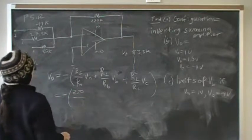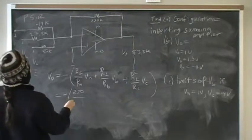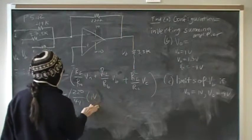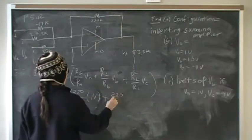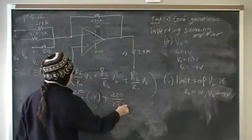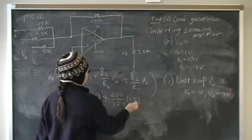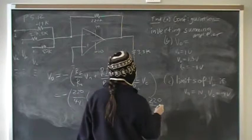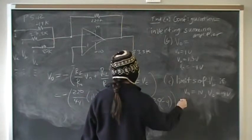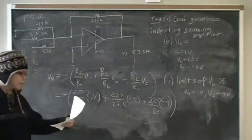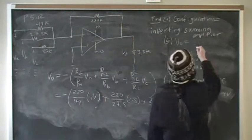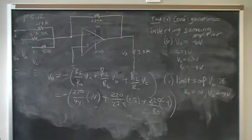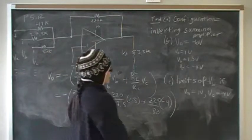We have negative (220/44 × 1 + 220/27.5 × 1.5 + 220/80 × -4). The kilos cancel out. When you put that into your calculator, you should get negative 6 volts. So those values of the incoming signals will give you a Vout of negative 6 volts.